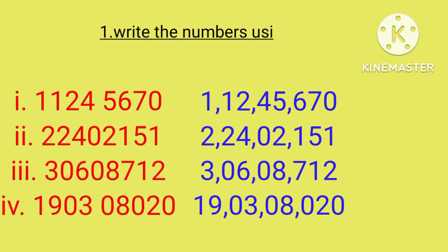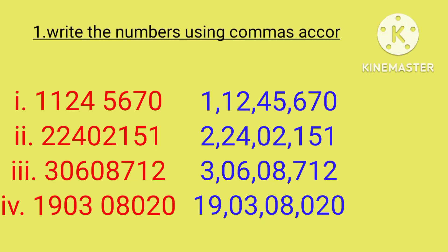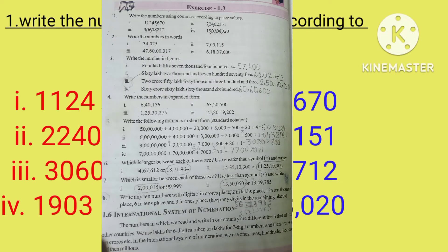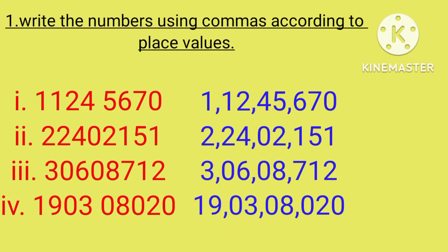Write the numbers using commas according to place value. First one is 1,12,45,670. Here we need to put commas like 1, 10, 100, 1000...